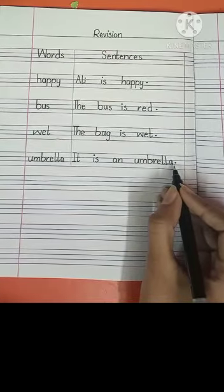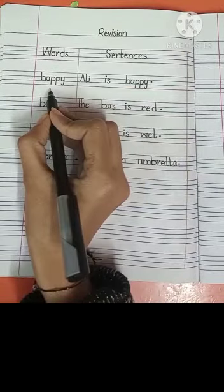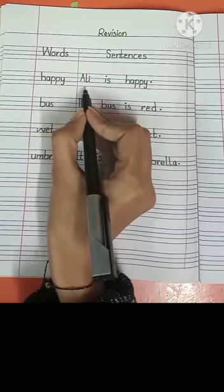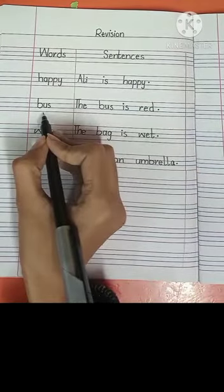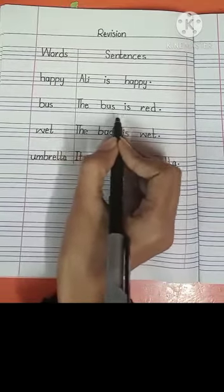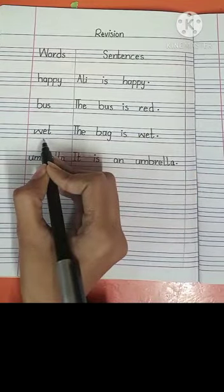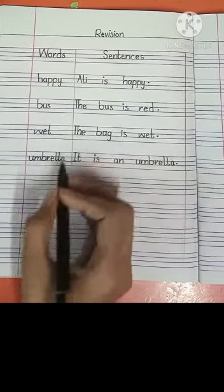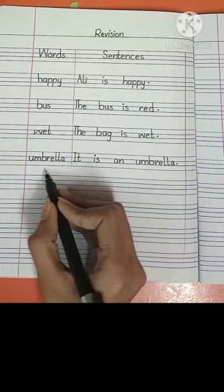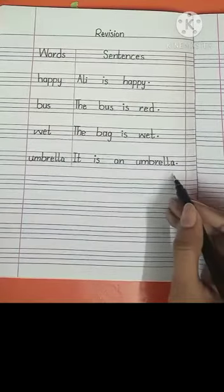Okay students, revise with me. Words and sentences. The first word is happy and the sentence of happy is: Ali is happy. The next word is bus and the sentence is: the bus is red. The next word is wet and the sentence of wet is: the bag is wet. The next word is umbrella and the sentence of umbrella is: it is an umbrella. Okay students, do practice of this work. Stay blessed. Allah Hafiz.